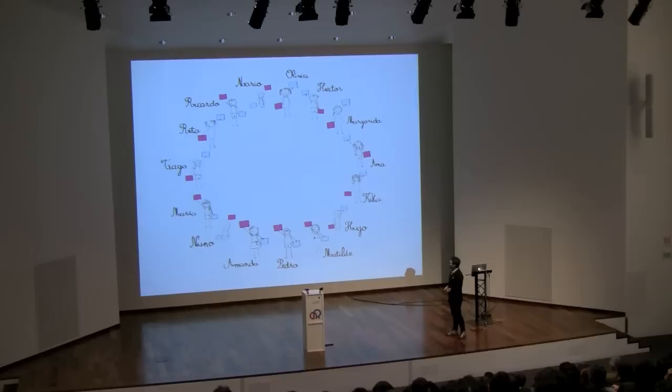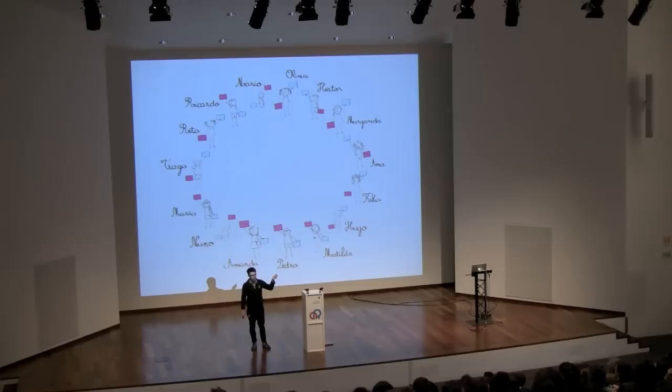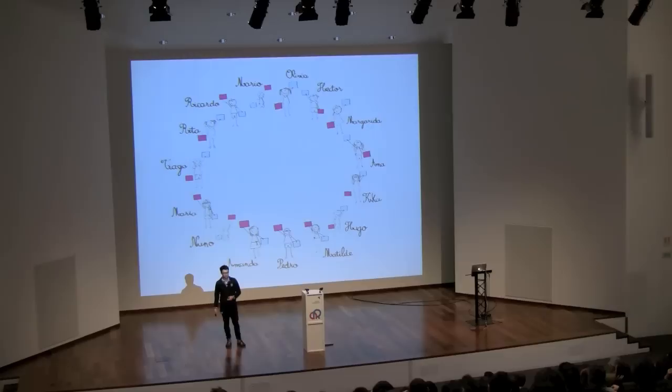Because we have 15 kids, and this is an odd number, whatever choice they make at the beginning for their cards, there will always be a majority. In this case, we have eight kids showing a blue card and seven kids showing a pink card.